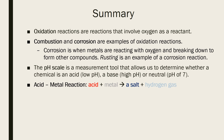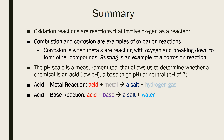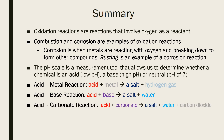An acid-metal reaction is when an acid reacts with a metal to produce a salt and hydrogen gas. An acid-base reaction is when an acid reacts with a base to form a salt and water — often called a neutralization reaction, because the low pH of the acid neutralizes the high pH of the base to produce neutral water. An acid-carbonate reaction is when an acid reacts with a carbonate to produce a salt, water, and carbon dioxide gas.